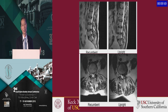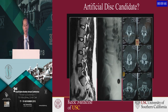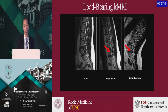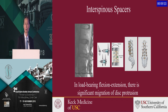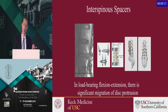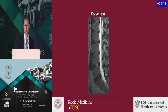For those doing artificial disc replacement in the lumbar spine, dynamic MRI can help pick up facet stenosis or foraminal stenosis that might make you question whether the patient is a good candidate for disc replacement. Regarding interspinous spacers, we can examine what happens to the disc when one is placed. Here's an example where when the patient flexes, the disc gets bigger — suggesting this might not be a great candidate for an interspinous spacer.